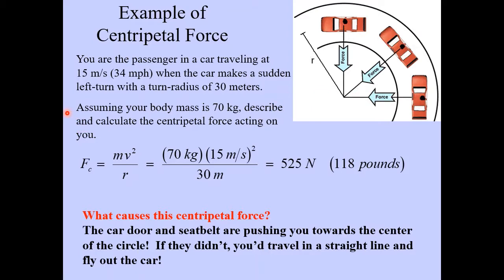So assuming your body mass is 70 kilograms, describe and calculate the centripetal force acting on you. So we know our equation here centripetal force is equal to mv squared over r. So let's plug in our numbers the mass of your body is 70 kilograms, your velocity is 15 and remember that's going to be squared and the radius here of the circle is the turn radius which is given as 30 meters. So this calculation comes out to be 525 newtons and remember a newton is about one-fifth of a pound. So this force equates to about 118 pounds.